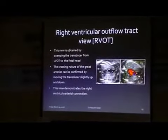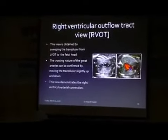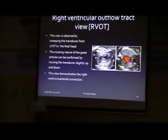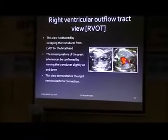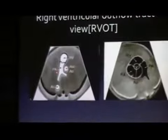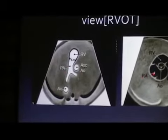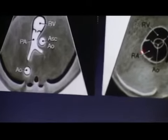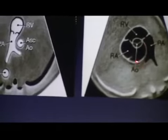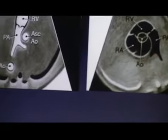This is the right ventricular outflow tract view — this is the pulmonary artery with its branches. Right ventricle and pulmonary artery with branches, and aorta in cross section. This is the right atrium, and the pulmonary artery with its branches, and the aorta at the center.